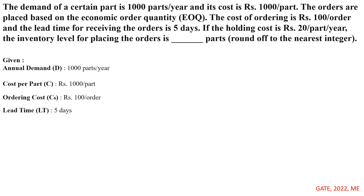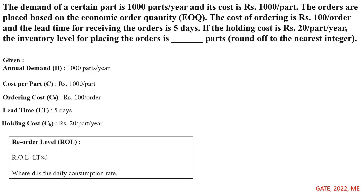If the holding cost Cₕ = 20 rupees per pot per year, we have to determine the inventory level for placing the order, that is, the reorder level (ROL).